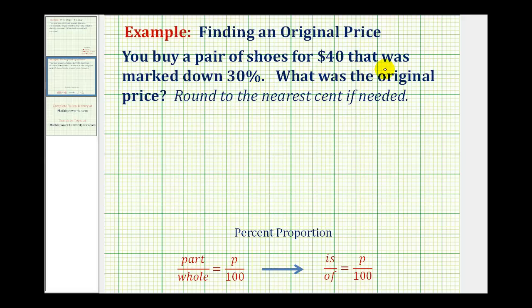You buy a pair of shoes for $40 that was marked down 30%. What was the original price? When solving a percent problem, there are two main techniques.